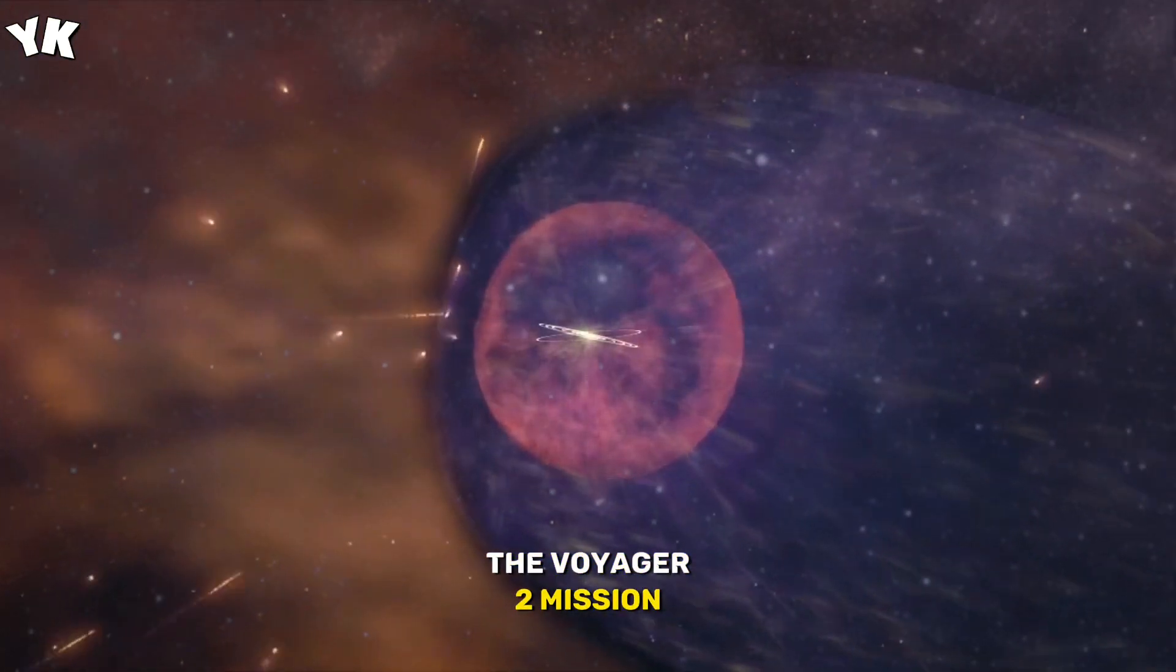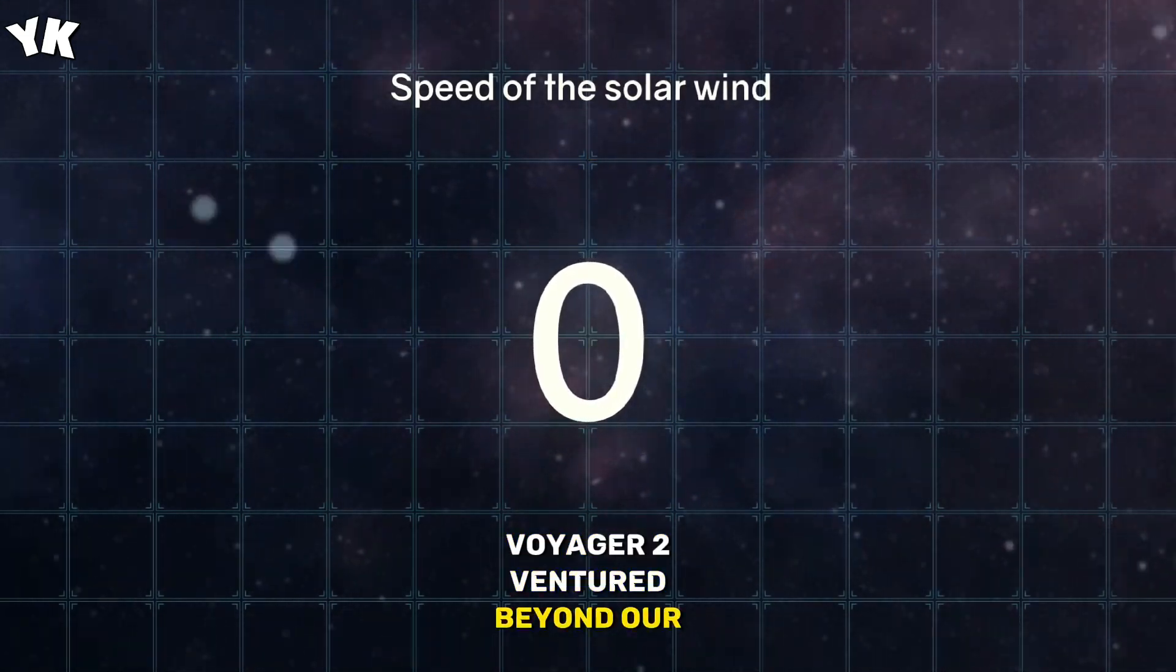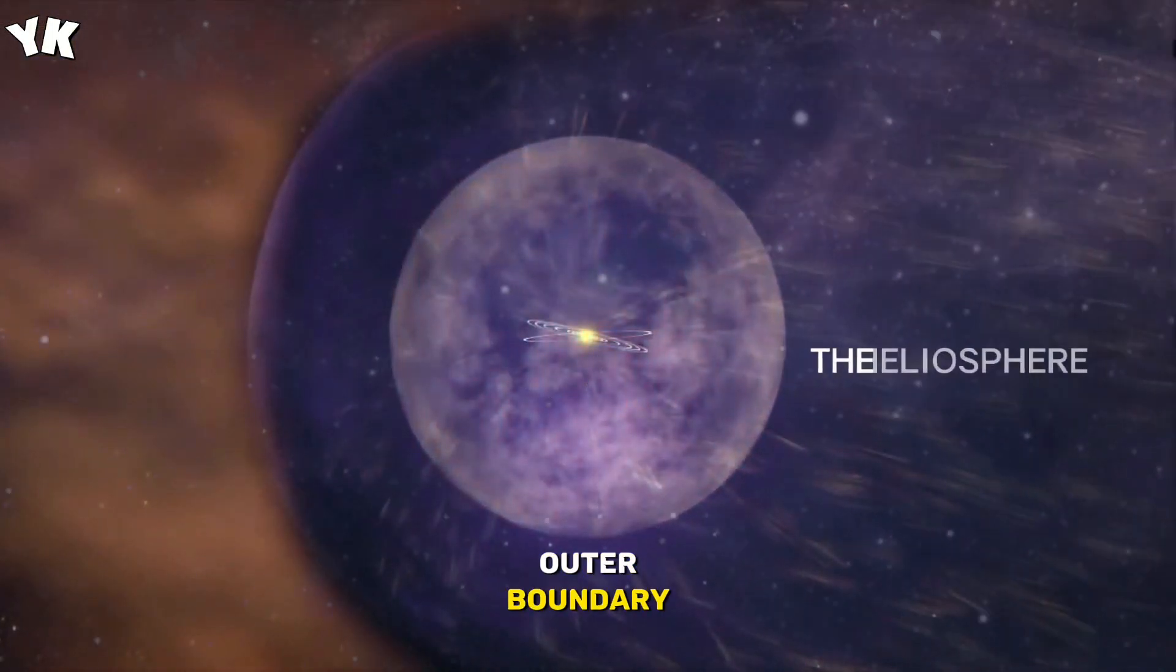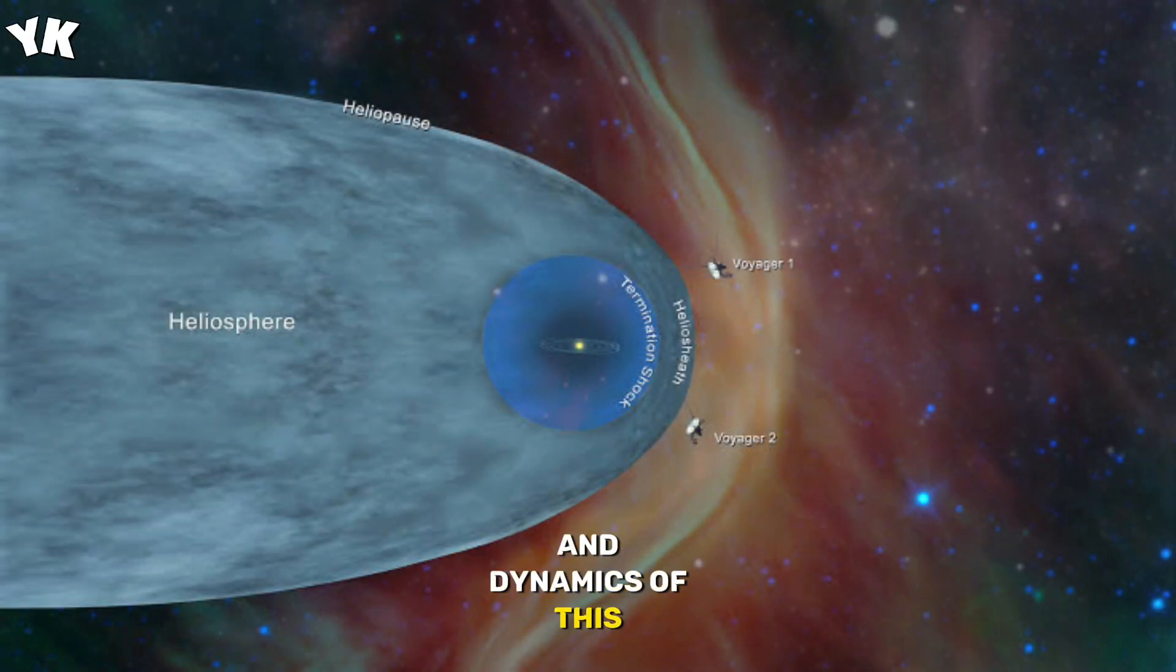The Voyager 2 mission. To gather this groundbreaking data, Voyager 2 ventured beyond our solar system's outer boundary, called the heliopause. This mission has allowed scientists to map the shape and dynamics of this protective bubble.